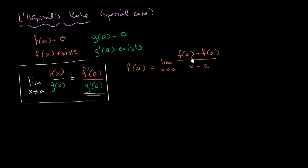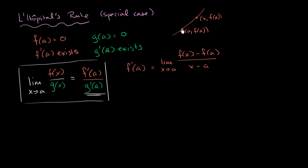This is literally just the slope between two points. If you have your function f(x), the point (a, f(a)) is here, and the point (x, f(x)) is here. This expression is the slope between these two points — the change in the y-value is f(x) minus f(a), and the change in the x-value is x minus a. We're taking the limit as x gets closer and closer to a, which is just another way of writing the definition of the derivative.